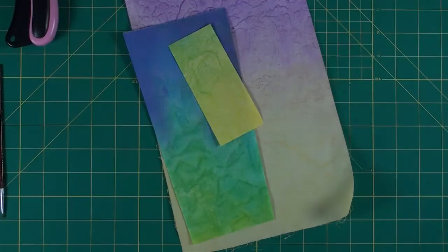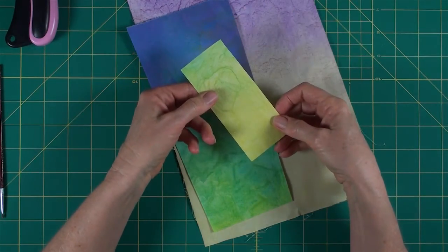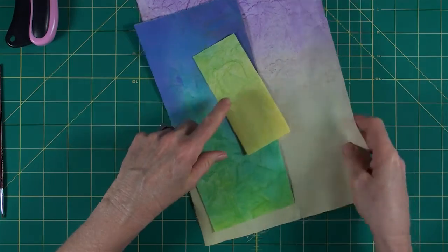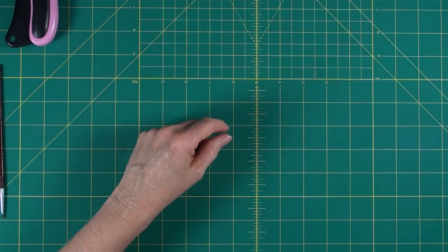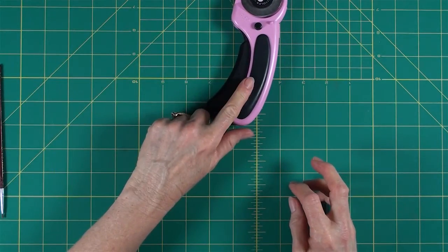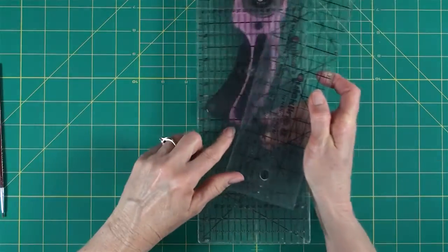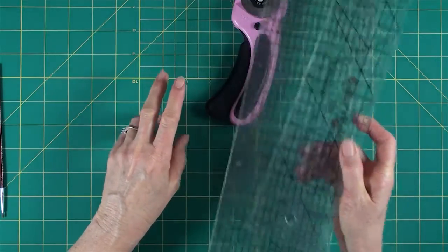The tools and materials I'll be using are my hand-painted, gradated, and stiffened fabric. I'll be using this yellow-green piece. I'll also be using a cutting mat, rotary cutter, and hard acrylic rulers, and you will need two.